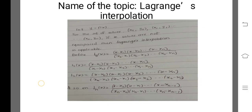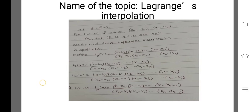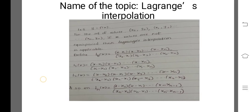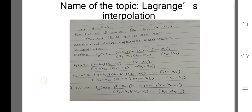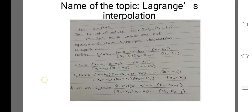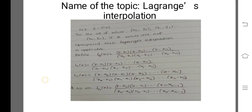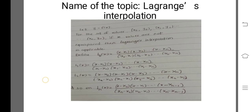Consider a function y equal to f(x) for the set of values x0, y0; x1, y1; and so on up to xn, yn. If the x-values are not equispaced, then Lagrange's Interpolation is applicable.